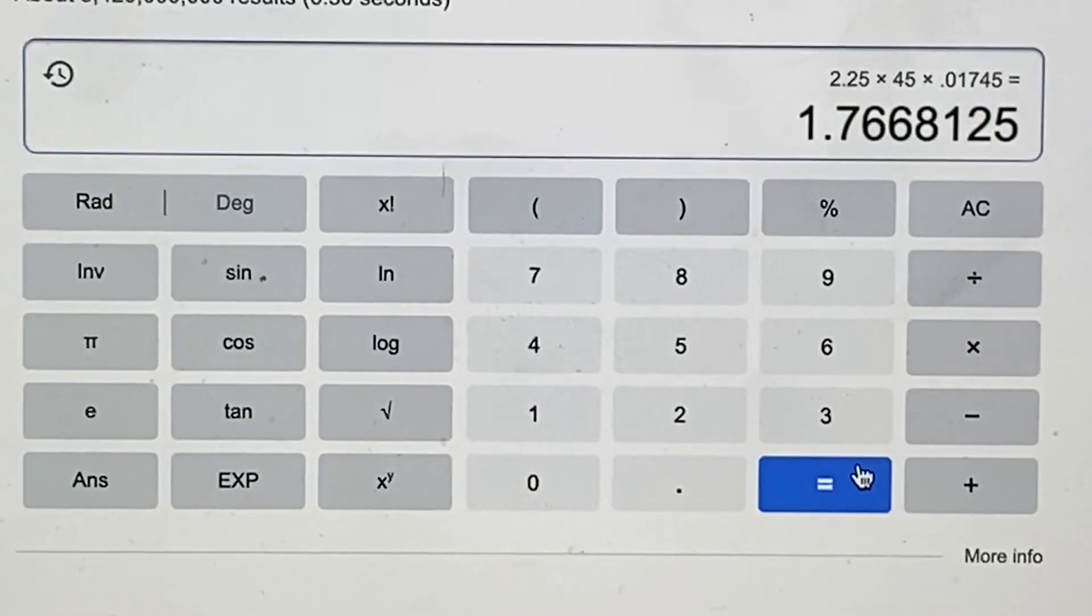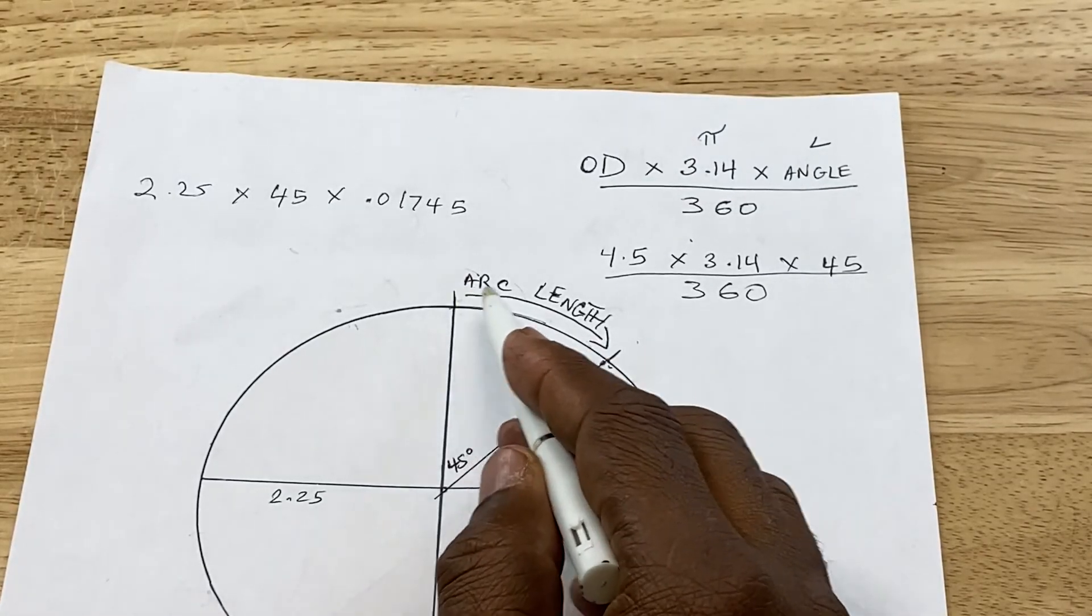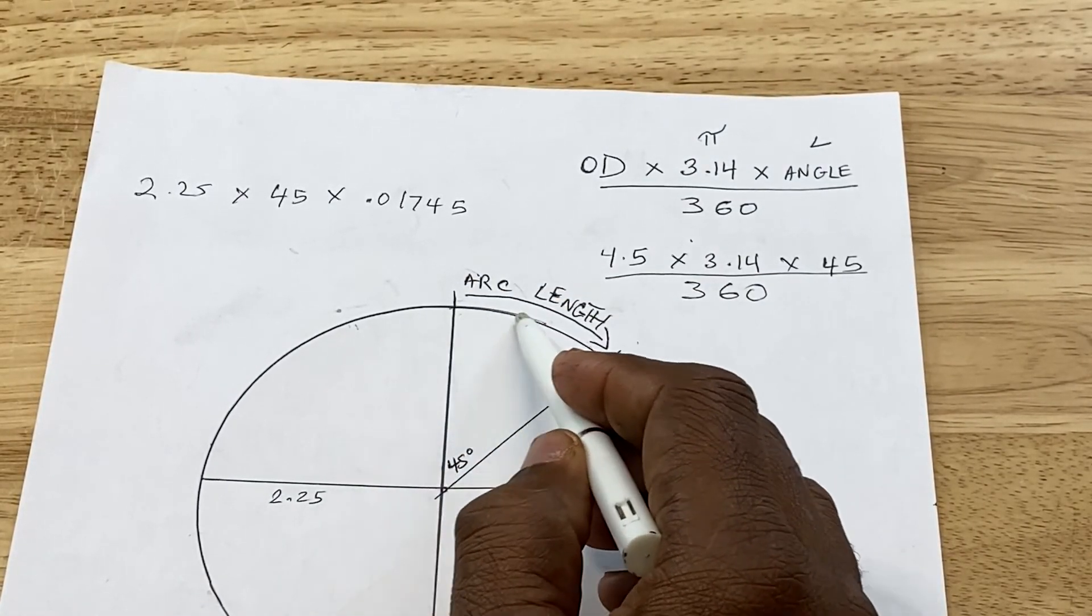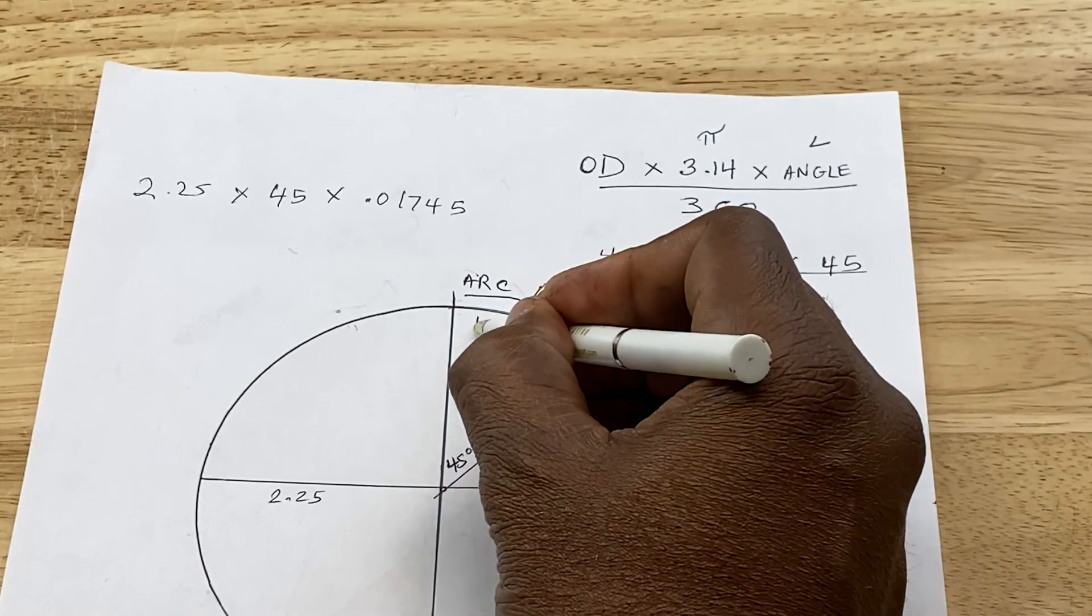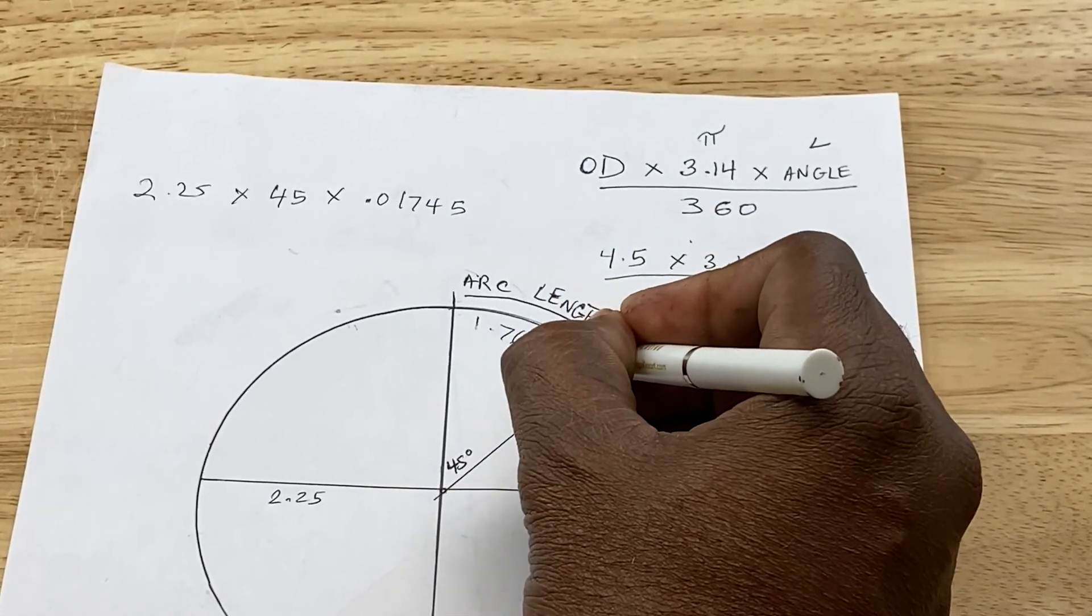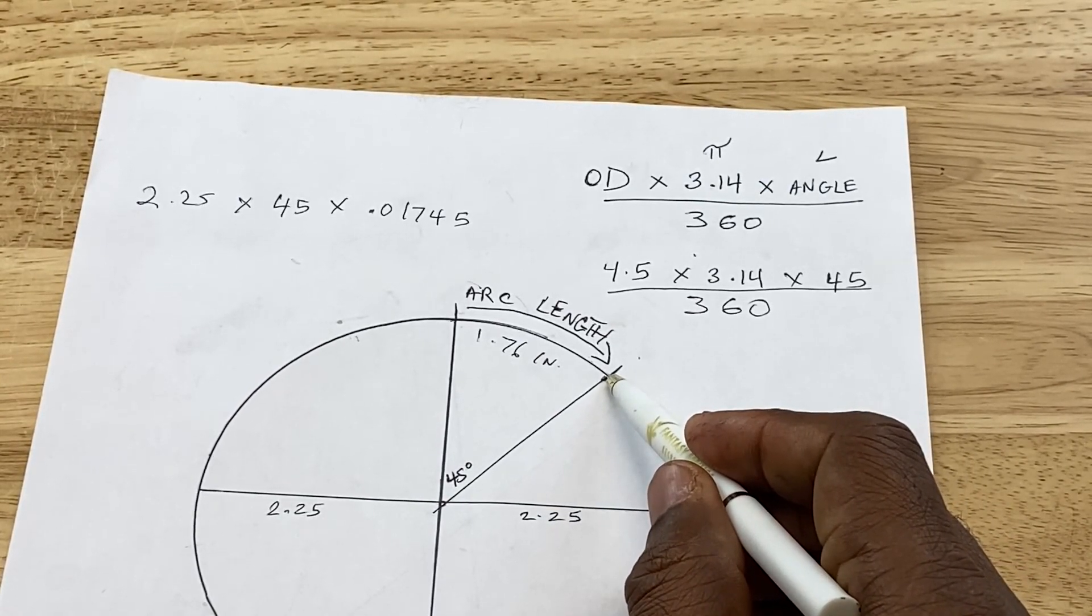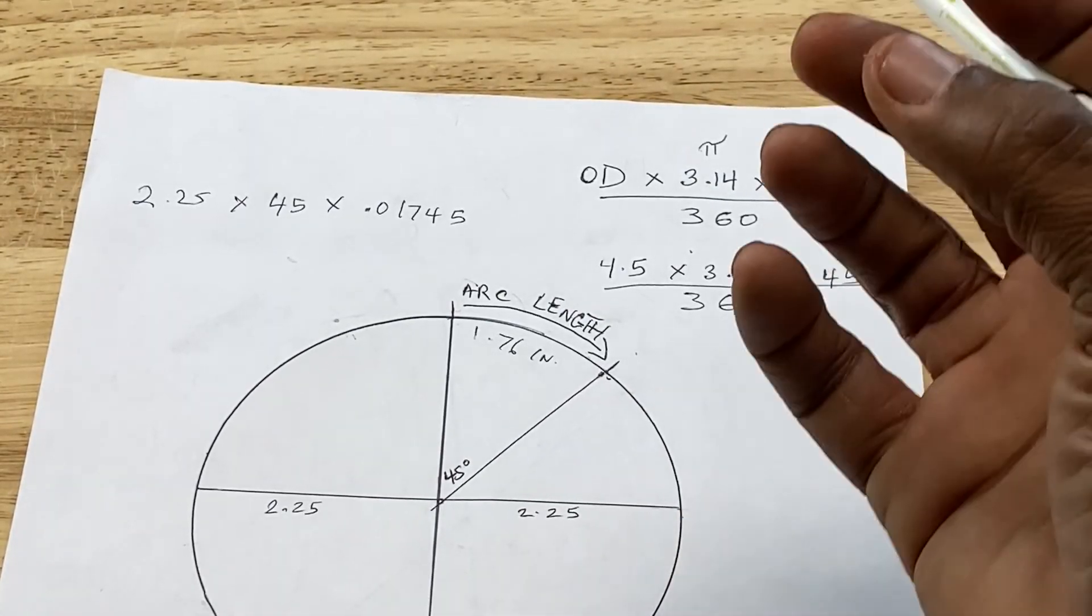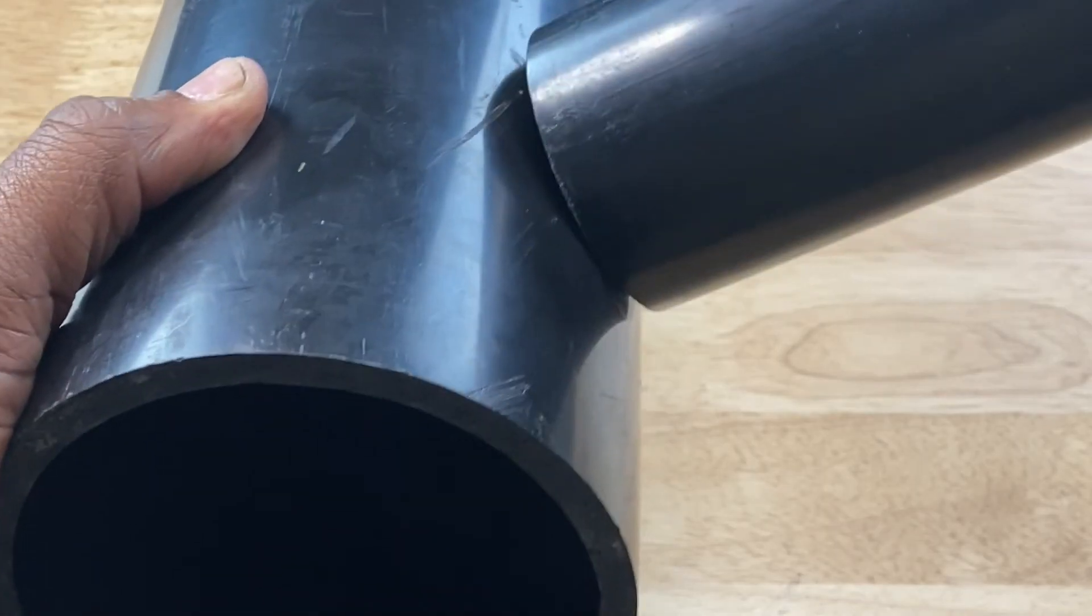And what do we get? That looks oddly familiar, doesn't it? So we now know that the arc length, the distance of this curved line is 1.76 inches. So we know that the center point of where we need to start drilling our hole into our larger pipe to insert our nozzle or pipe is going to be right here. There are so many applications when it comes to measuring curved lines from piping to welding to surveying.